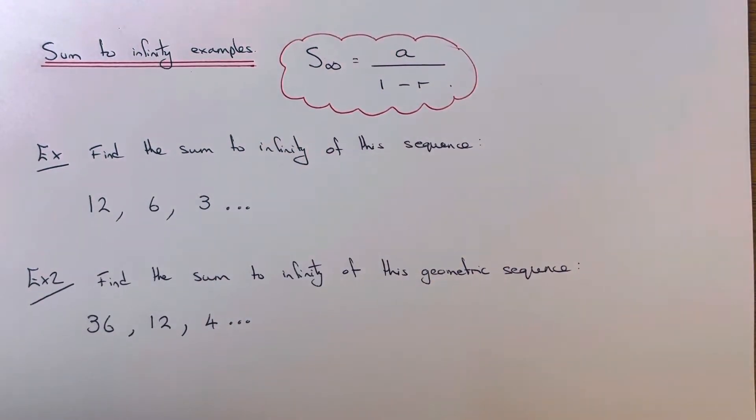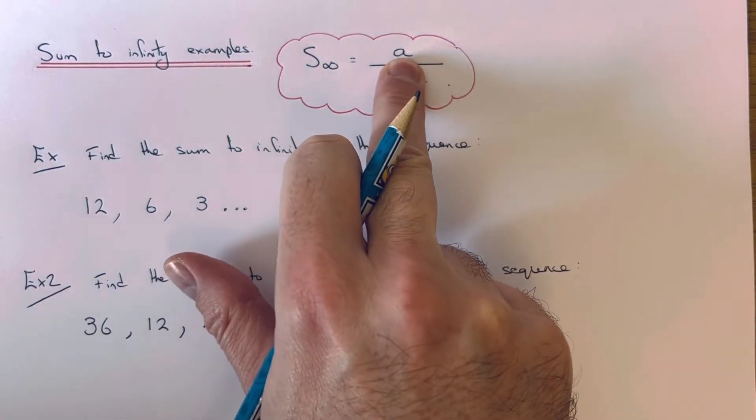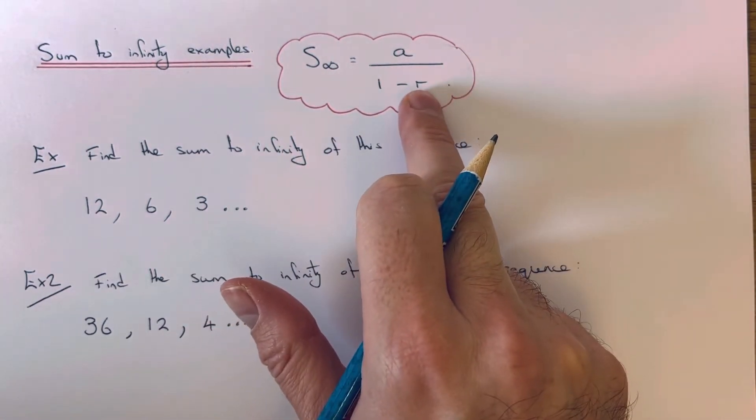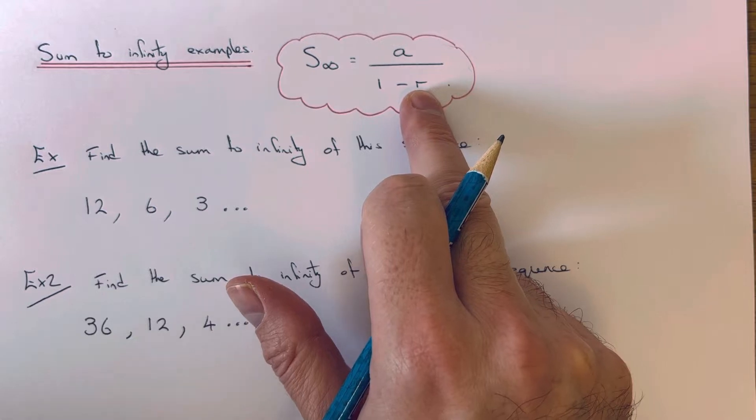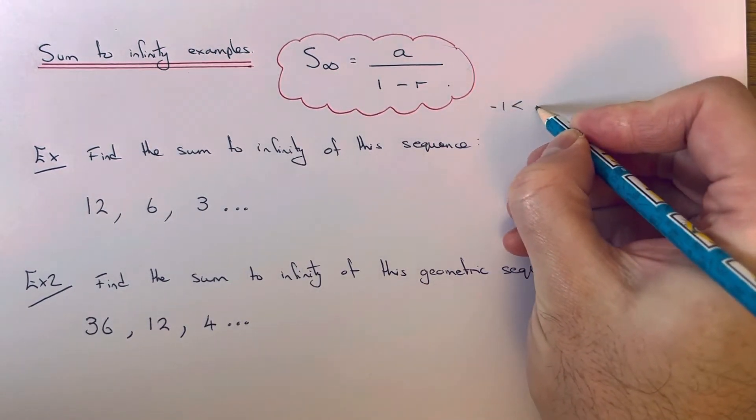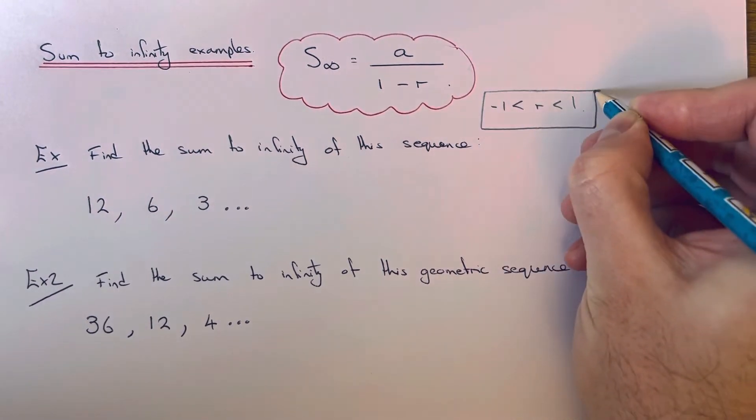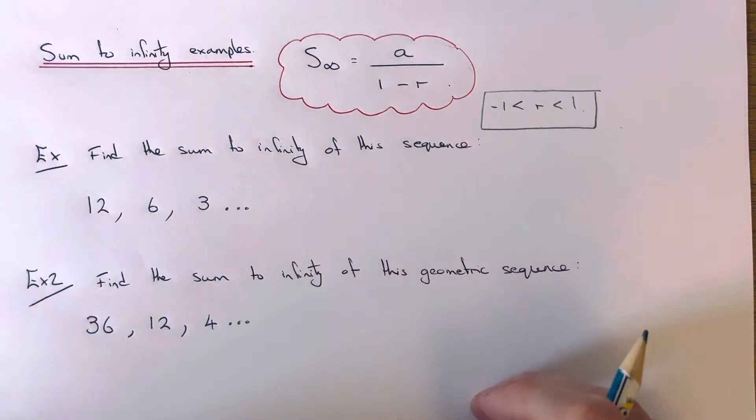It's quite a simple formula. So a is your first number in the sequence and r is the common ratio. Now to work out the sum to infinity, the common ratio has to be between minus 1 and plus 1. If it's not, then you wouldn't be asked to work out the sum to infinity.